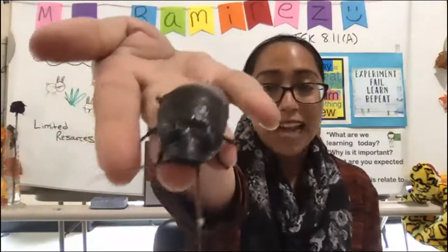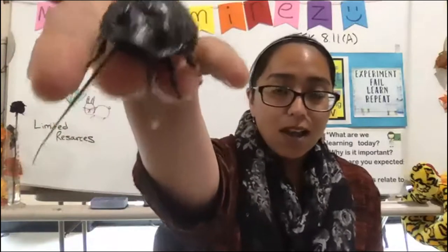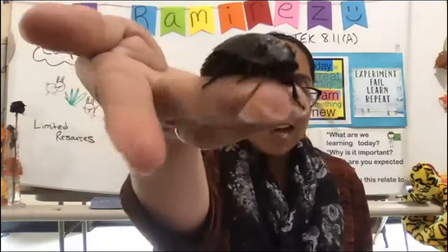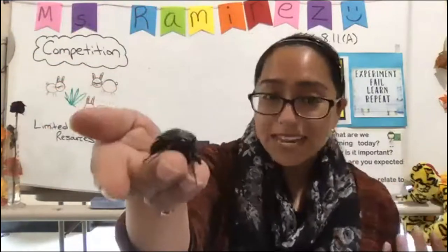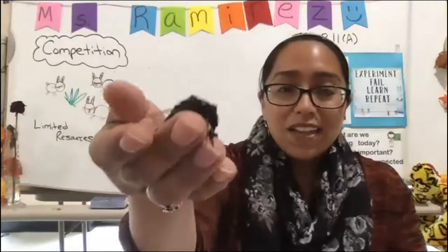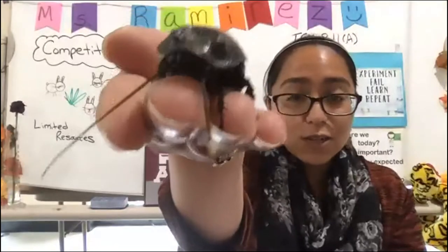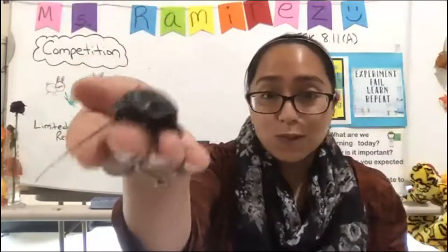Hello, my name is Ms. Ramirez, and in this segment we're going to be learning about how animals compete for resources. Before we start our presentation, I have a couple of animal friends to show you. My first one is a Madagascar hissing cockroach. They get that name because they are from the island of Madagascar, and also the name hissing because they make a loud hissing sound when they feel scared or threatened. When competing for territory, a mate, or hierarchy, they will use those big bumps or horns on the top to fight each other for those resources.